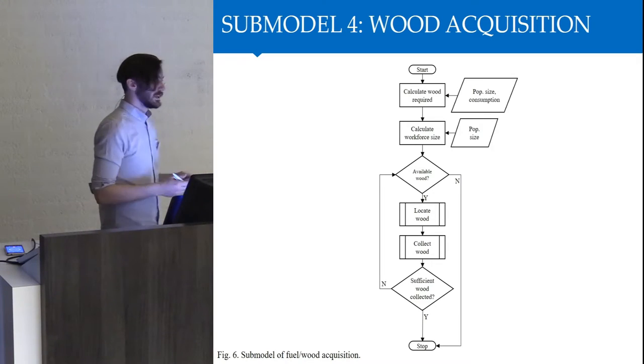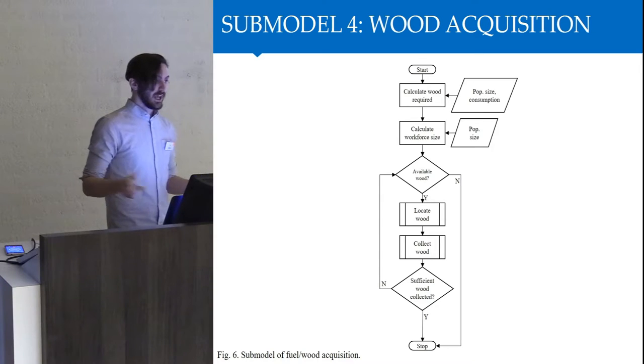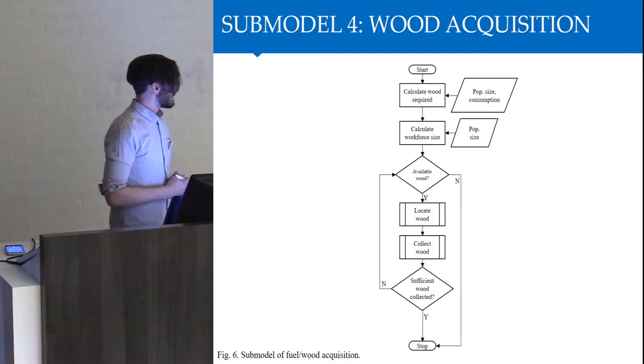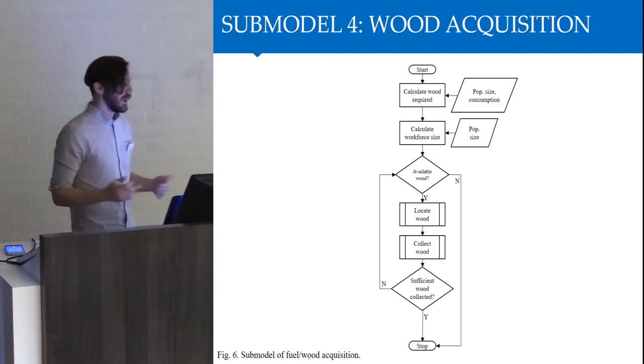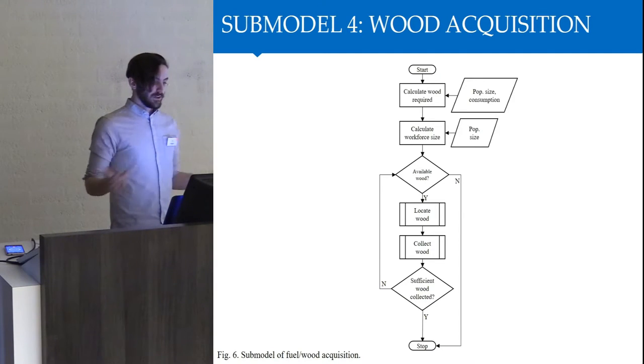They will continue collecting wood from there and bringing it back to the settlement until the wood available in that area falls below the average, at which point they'll find the next nearest area with more than the average amount of wood in the whole landscape. If they've collected enough wood, great, this process stops. If not, the process repeats until either there is no more land, the year is over, or they've collected enough wood.